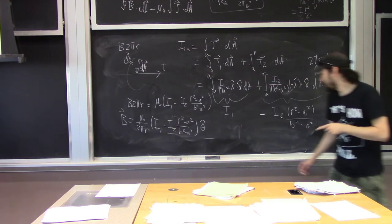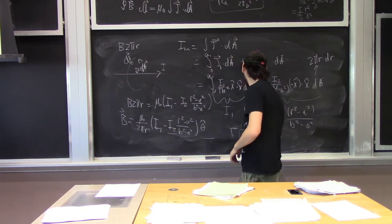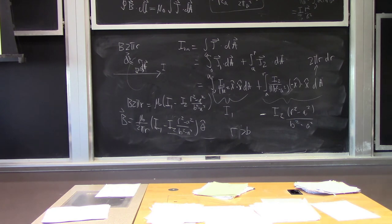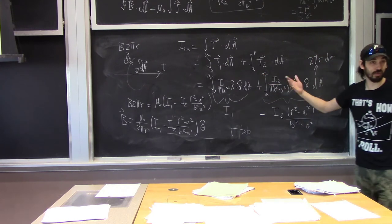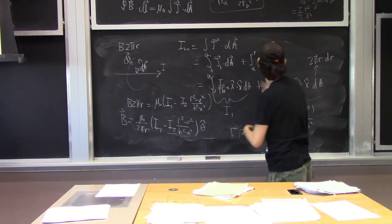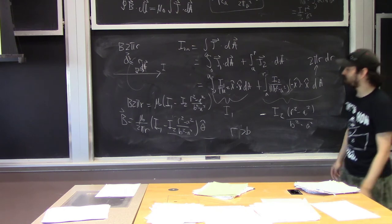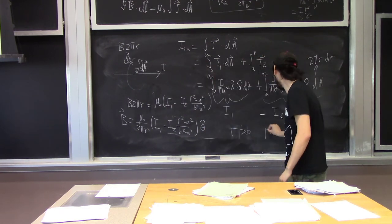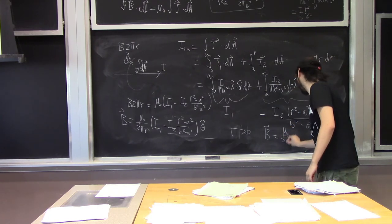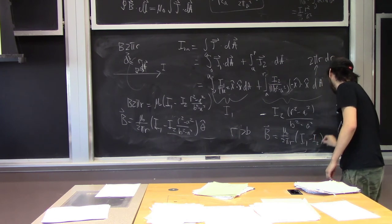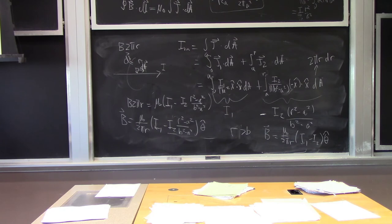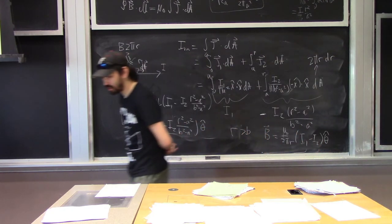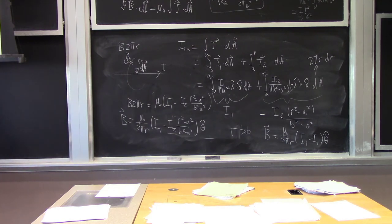The last region is where R is greater than b. This only changes one thing: the upper bound of the second integral becomes b instead of r. When we do that, the term becomes (b²−A²)/(b²−A²), which equals 1. So the result is B = μ₀/(2πr) × (I₁ − I₂) in the θ-hat direction.